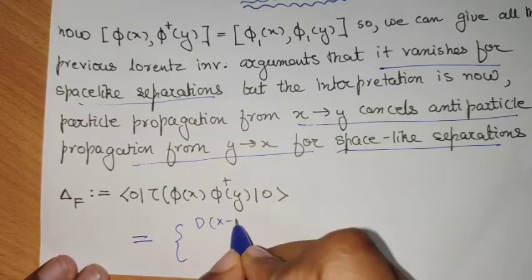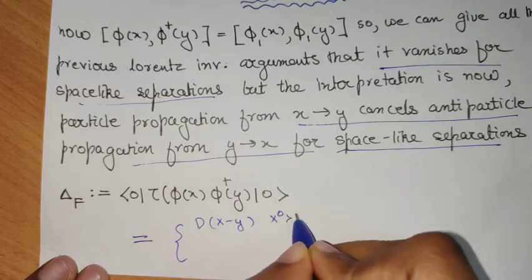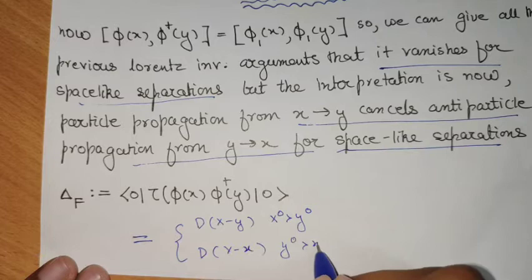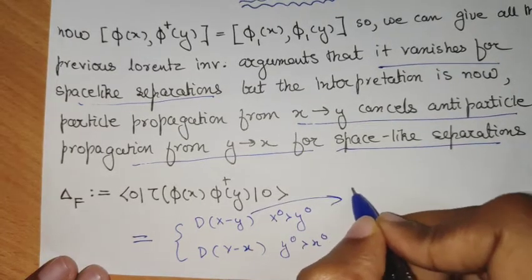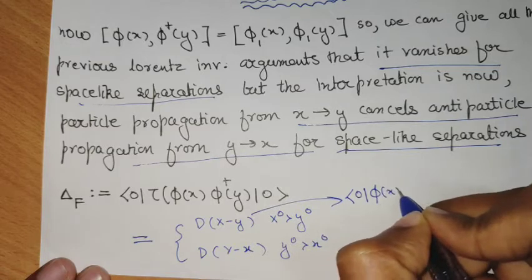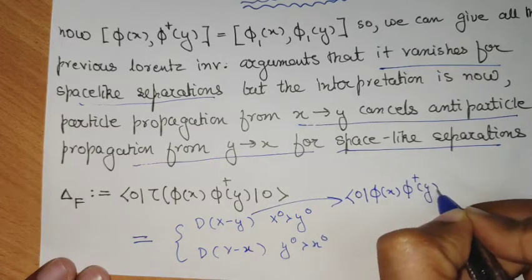Which is simply, again, dx minus y for x0 greater than y0 and dy minus x for y0 greater than x0,